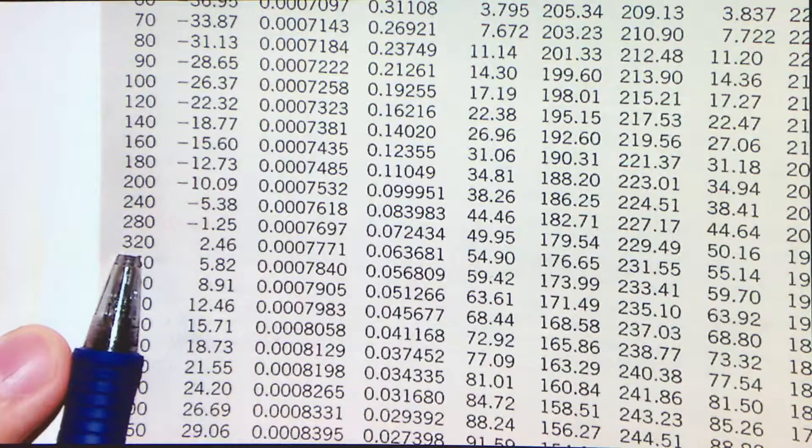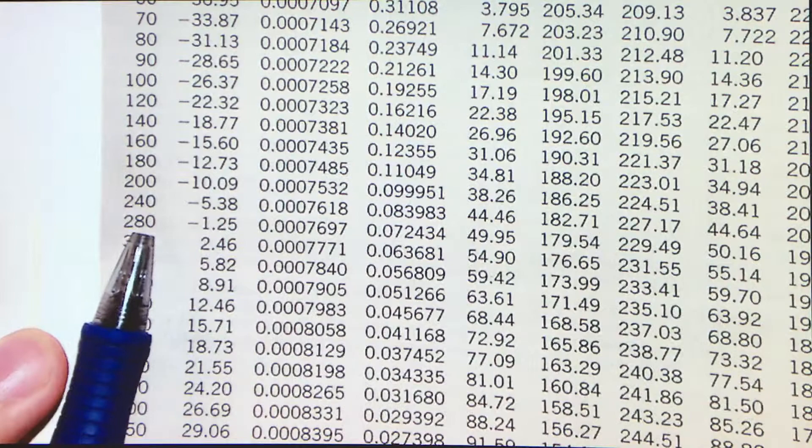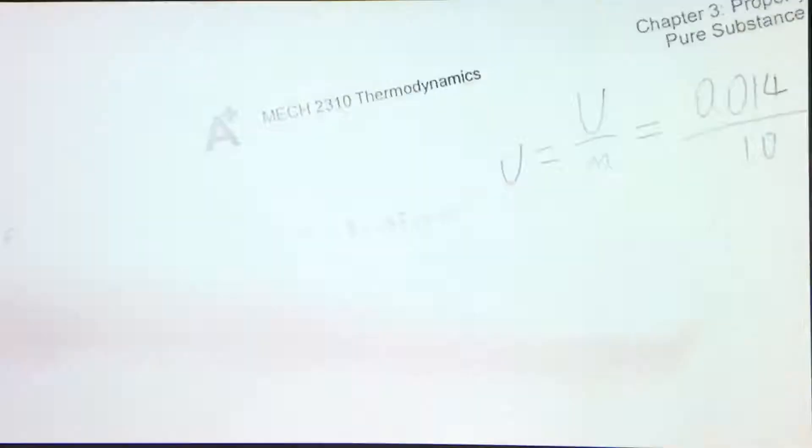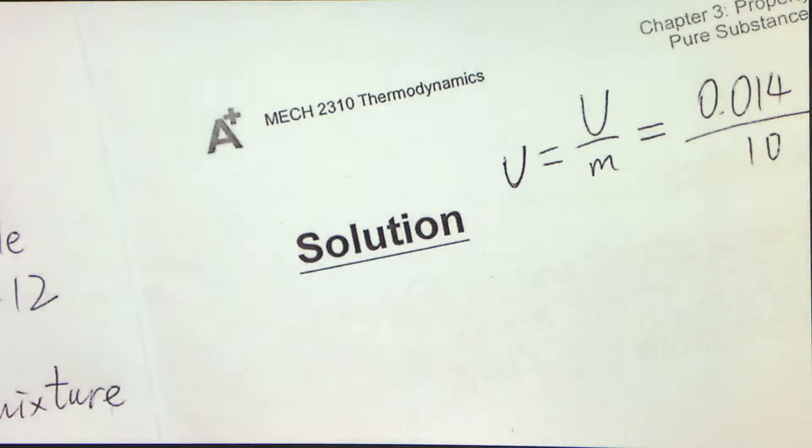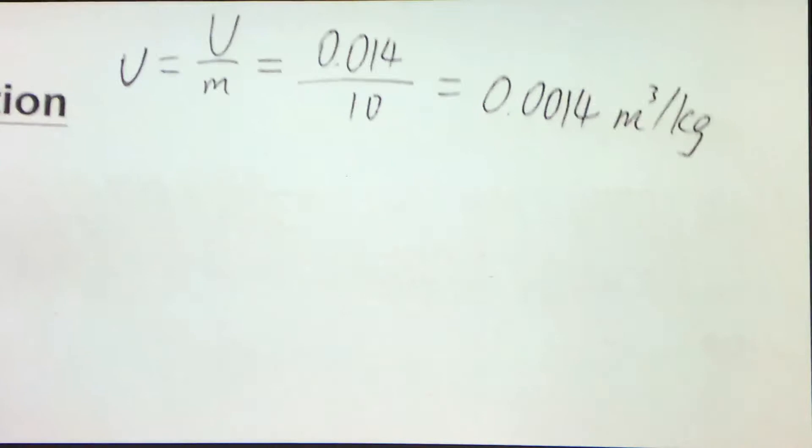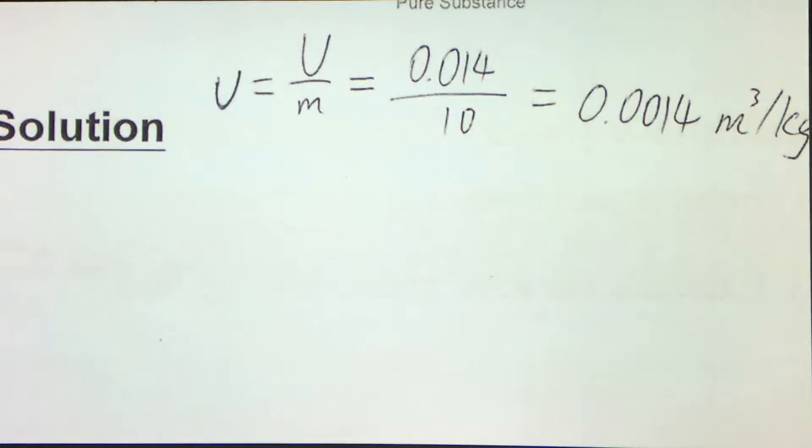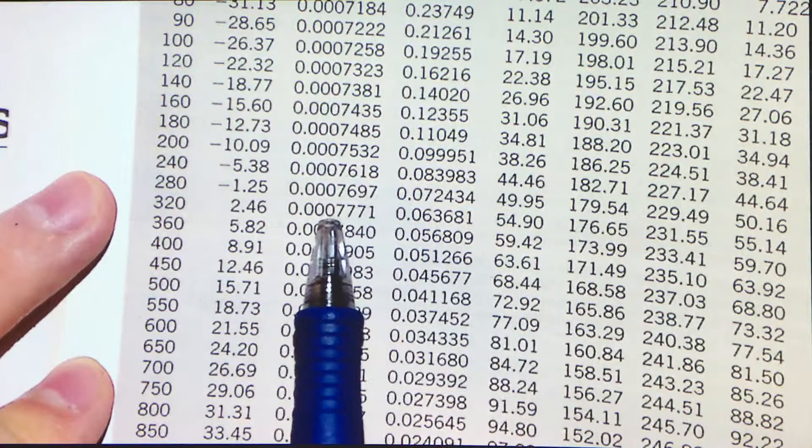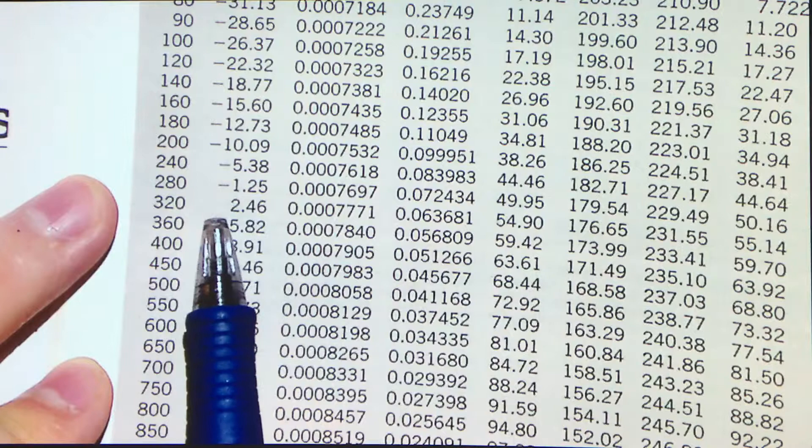300. Unfortunately, you can see that we only get data for 280 and 320. And where is 300? That's missing. If it's missing, then we need to use the method I have shown you in the previous example, that's linear interpolation. Here, this linear interpolation is actually very easy to do because 300 just lies between 280 and 320. So we can guess the Vf at 300 kilopascal very easily. So we have these two numbers, 0.00007697 and 0.00007771.